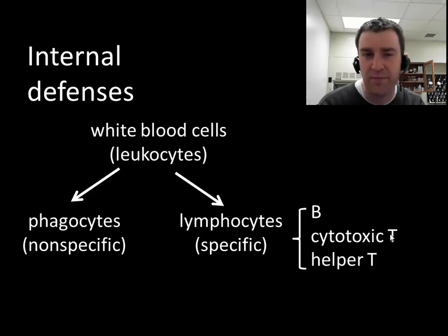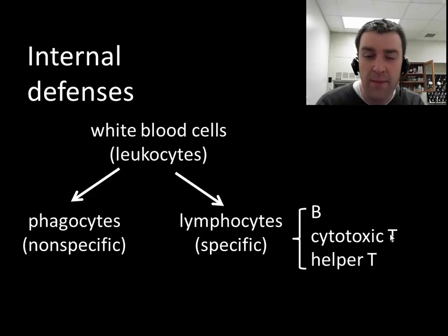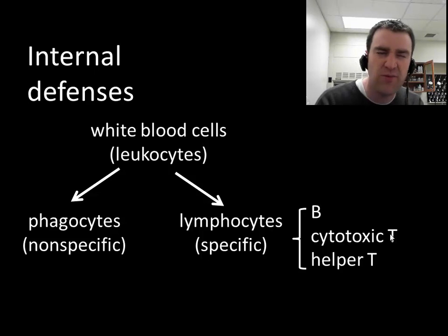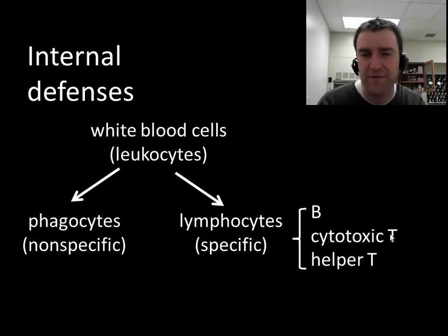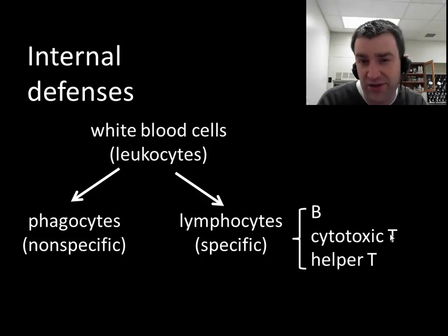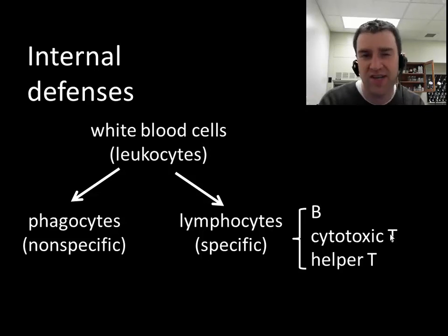We can broadly think of white blood cells as the defenders — the constituents of the overall immune system. We can further subdivide them into two broad groups. I'm going to use the word phagocytes to talk about all cells that nonspecifically try to deal with threats. They can recognize a broad spectrum of pathogenic particles like viruses, bacteria, worms, and fungi, and try to destroy them directly, usually through phagocytosis — taking them in or releasing enzymes to attack them.